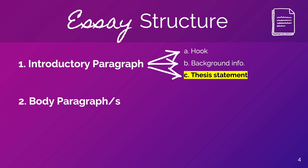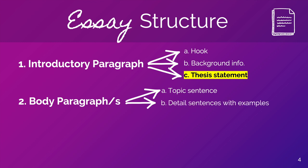Number two is the body paragraph, or body paragraphs. A normal type of essay has three body paragraphs, but there can also be just one body paragraph — it depends on the essay. The first sentence of your body paragraph is called the topic sentence. The second, third, and fourth sentences can be detailed sentences with examples. And the last sentence of your body paragraph is called a conclusion sentence — it draws a conclusion about the topic sentence.